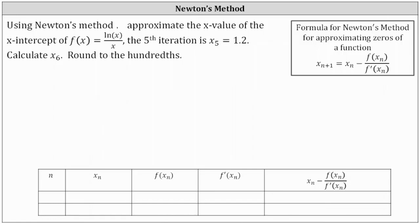Using Newton's method, approximate the x-value of the x-intercept or root of f(x) equals natural log x divided by x. The fifth iteration is x₅ equals 1.2. Calculate x₆ and round to the hundredths place value.